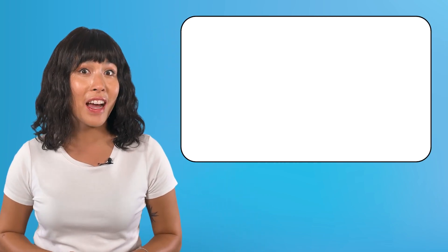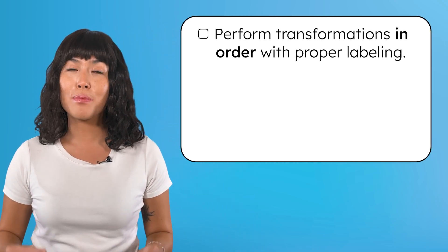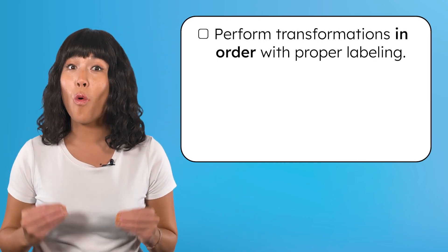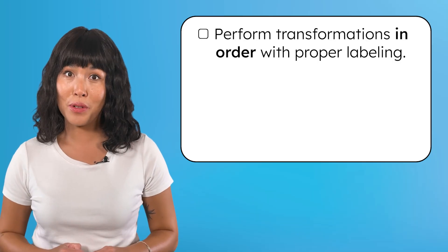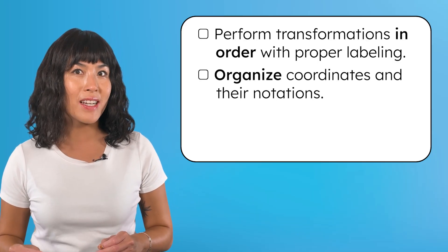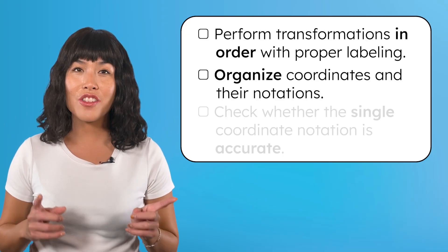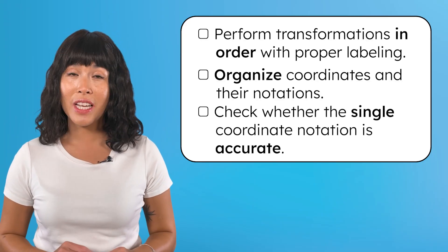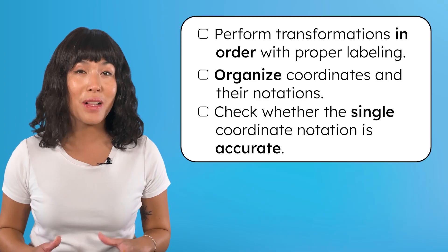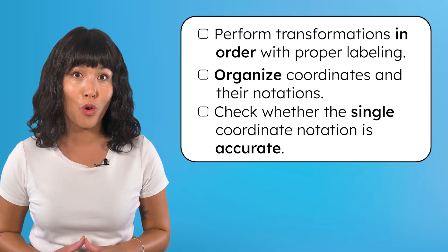When working with sequences of transformations, it can feel like there's a lot of information, but as long as you take it step by step, you'll do just fine. Here's a checklist that you may find helpful: perform transformations in order with proper labeling, organize coordinates and their notations so we can more easily observe changes, and check whether the single coordinate notation is accurate by applying it to a pre-image coordinate.